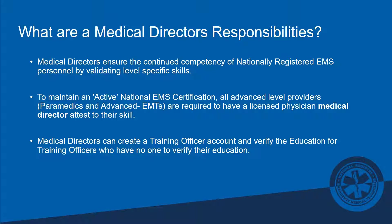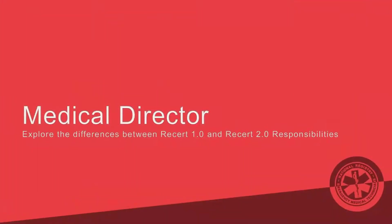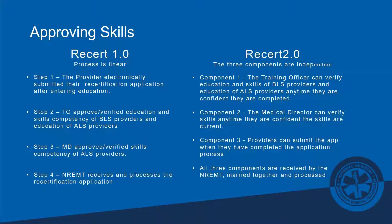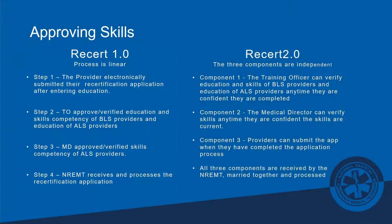You'll also be verifying skills on inactive-to-active forms. The difference between Research 1.0 and 2.0 is that Research 1.0 was a linear process: the provider submitted an application, the training officer approved the education or skills for BLS, and then the medical director would approve the skills for ALS.